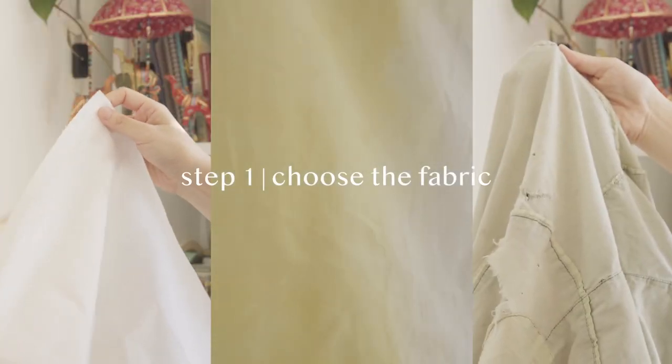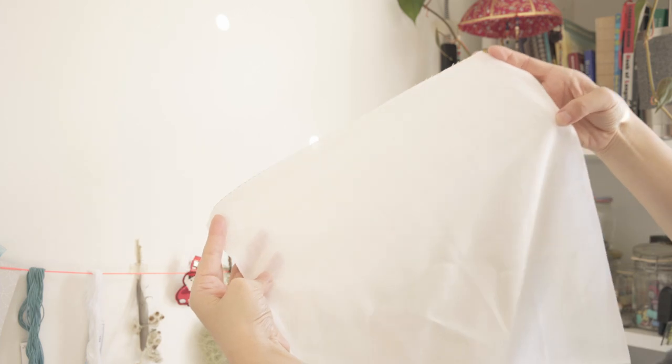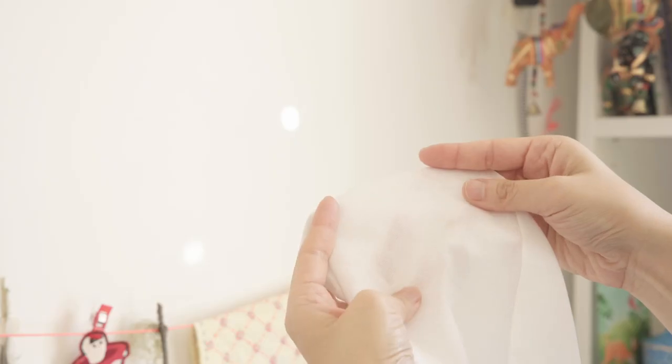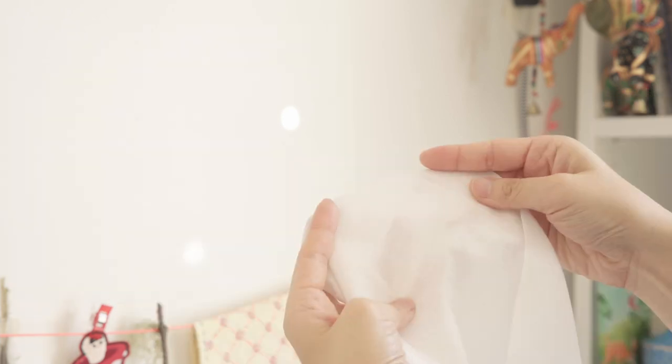Step one, choose the right fabric. Traditionally, the fabric used to make hana fukin is called sarashi, a loosely woven white cotton fabric. It is usually sold in 34 cm wide with selvedge on both sides. The more you use it, the softer and water absorbent your hana fukin will become.